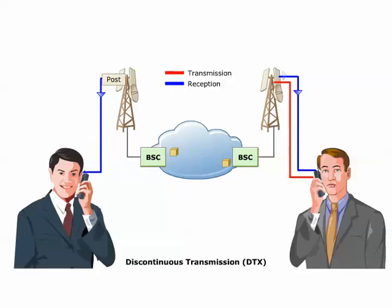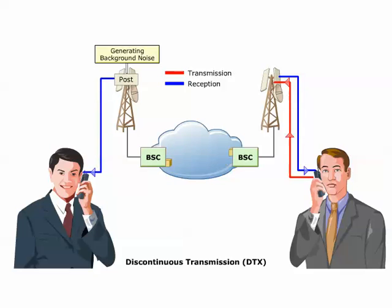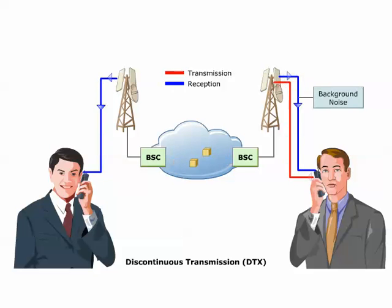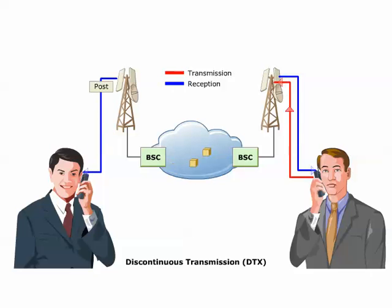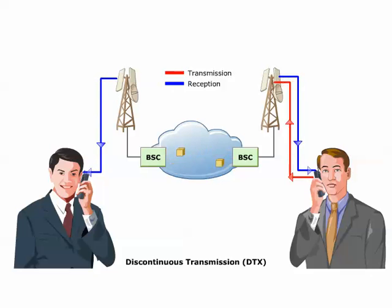The POST signal incorporates background noise information from the MS, which enables the BTS to generate background noise. This ensures that the other subscriber on the call hears something and does not think that the mobile subscriber has ended the call. The MS transmits the POST signal periodically during a speech pause to enable the BTS to update the background noise.